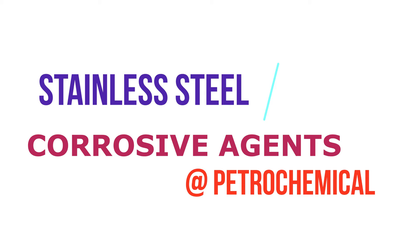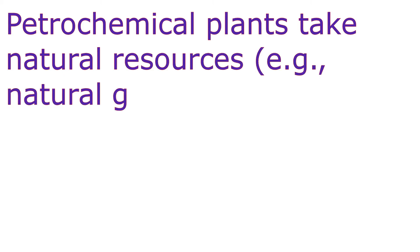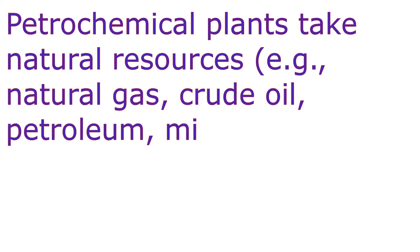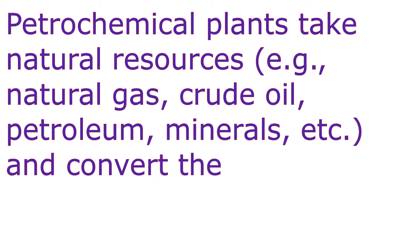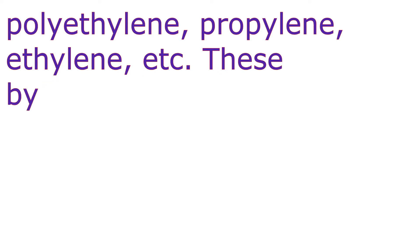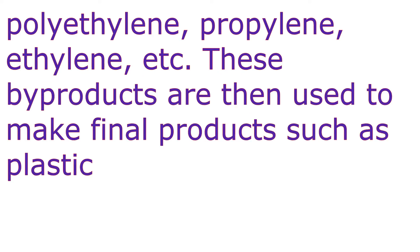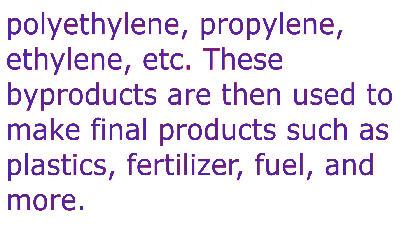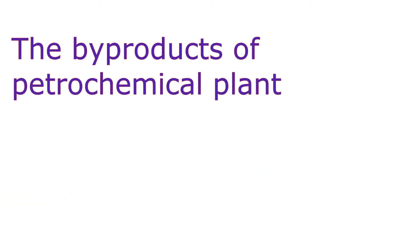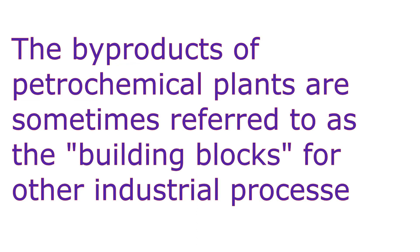Stainless steel conduits and fittings for petrochemical applications. Petrochemical plants take natural resources — natural gas, crude oil, petroleum, minerals, etc. — and convert them to by-products such as polyethylene, polypropylene, ethylene, etc. These products are used to make finer products such as plastic, fertilizer, fuel, and more. The by-products of petrochemical plants are sometimes referred to as building blocks for other industrial processes.